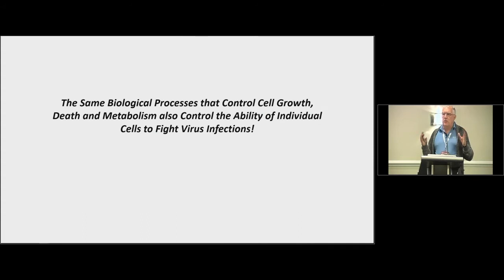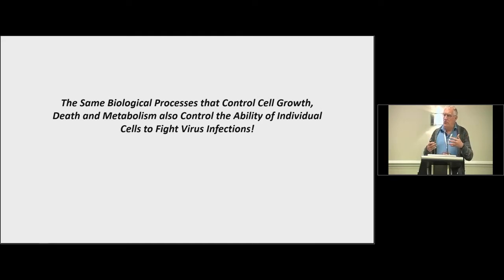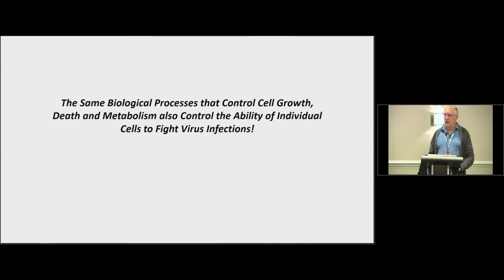The most important point is that the same processes that control cell growth, cell death, apoptosis, metabolism, and immune invasion are also programs involved in controlling the ability of individual cells to fight virus infections. So inherently, a tumor cell has acquired mutations in pathways it would normally use to fight a virus infection. As a result, tumor cells are inherently susceptible to some extent — and as Kaiwai pointed out, it's going to be different between different cells and different patients.